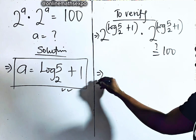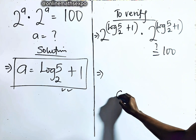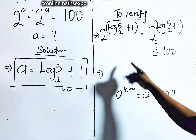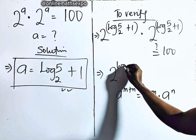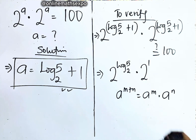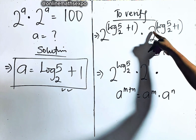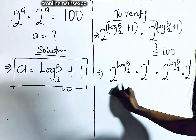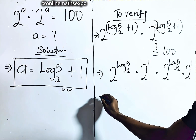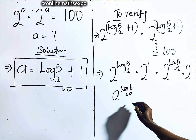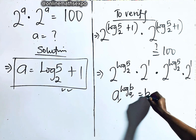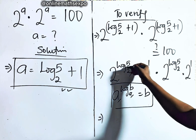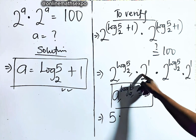Just remember, for every a to the power of m plus n, it is a to the power of m multiplied by a to the power of n — addition in the exponent splits into multiplication. So this gives us 2 to the power of log of 5 base 2, times 2 to the power of 1. Then we bring down the outer multiplication and do the same: 2 to the power of log of 5 base 2, multiplied by 2 to the power of 1. Now remember, for every a to the power of log of b base a, where the two bases are the same, it gives you b. So applying this rule here — did you observe that these two bases are the same? — this gives us 5.